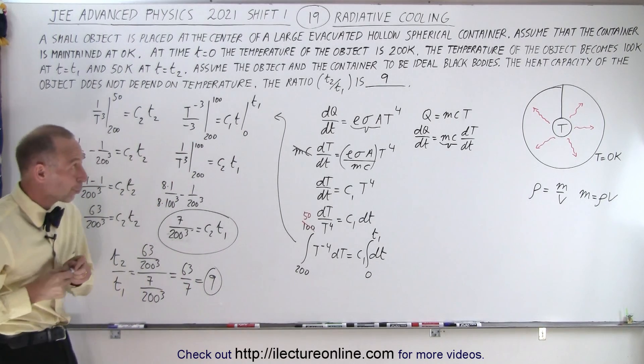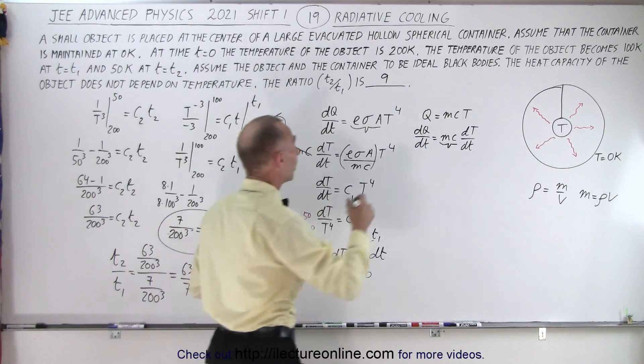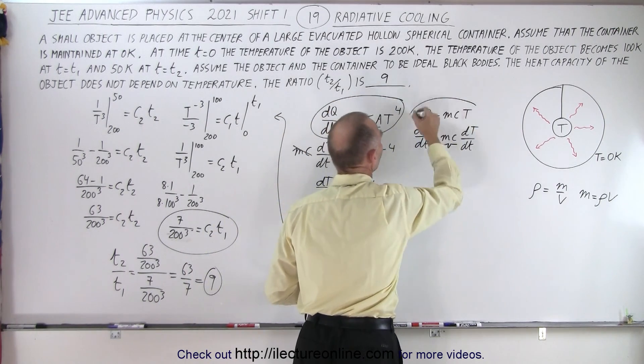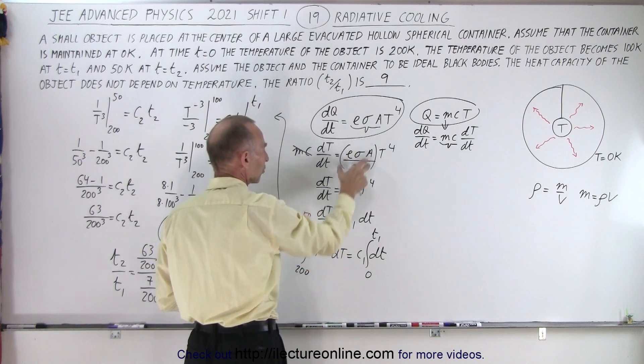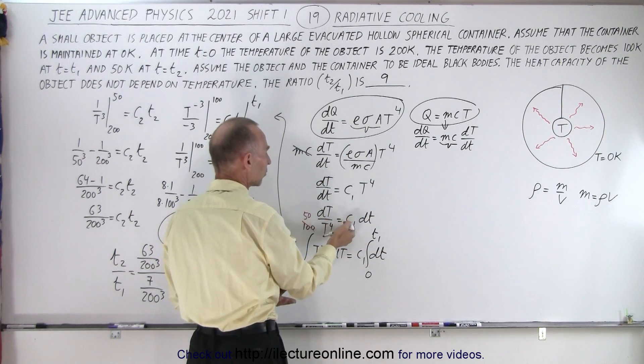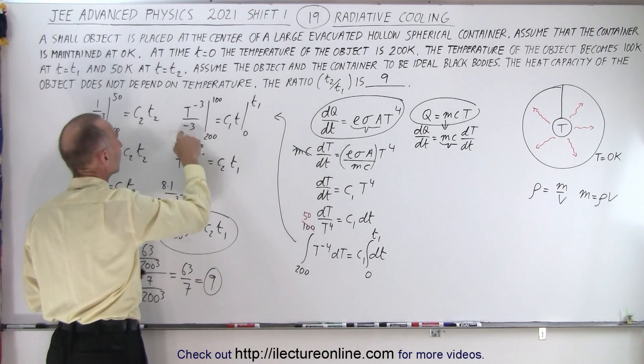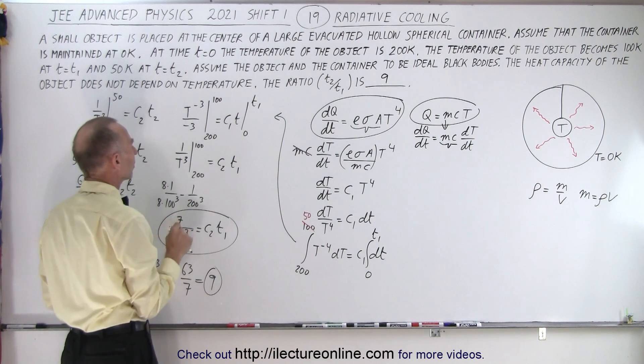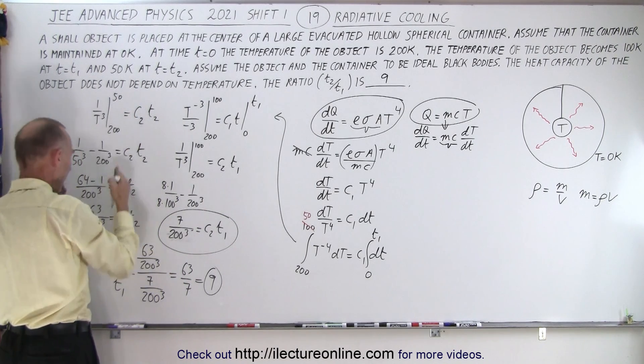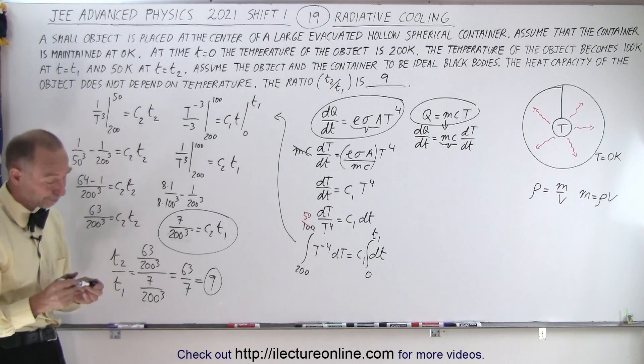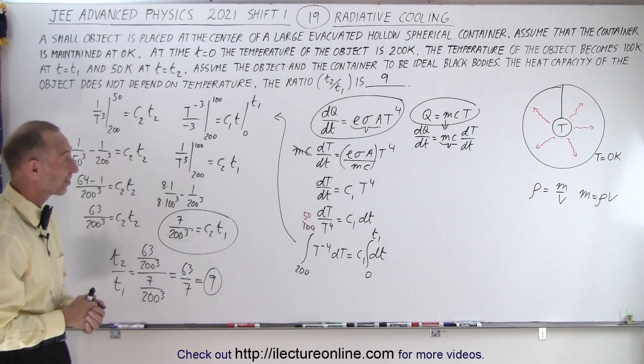You only get 3 minutes to read the problem, gather your thoughts, and solve it. You'd be hard-pressed to do that in 3 minutes. The key steps: know the equation dQ/dt = εσAT⁴, turn it into a differential, replace dQ/dt with mc(dT/dt), treat constants together to get dT/T⁴ = c₁dt, then integrate. Integrating T⁻⁴dT gives 1/T³ from 200 to 100, then from 200 to 50. The ratio is 63/7 = 9. That's the challenge of JEE Advanced physics tests.